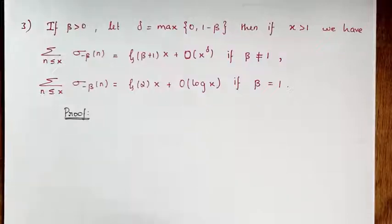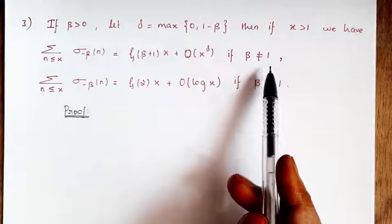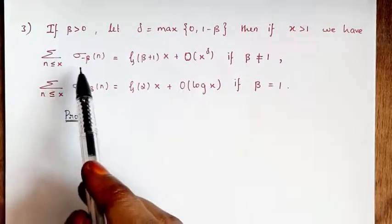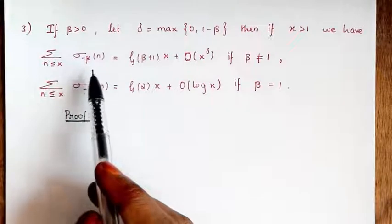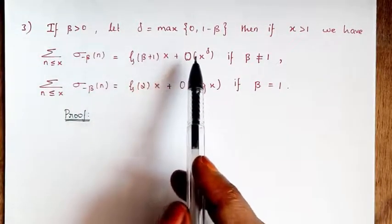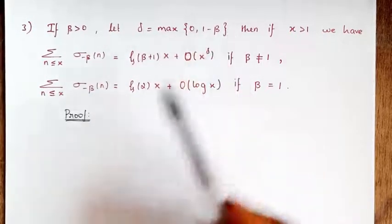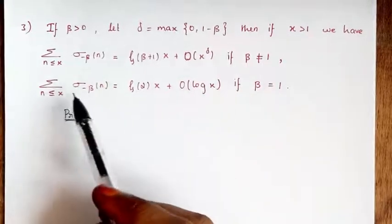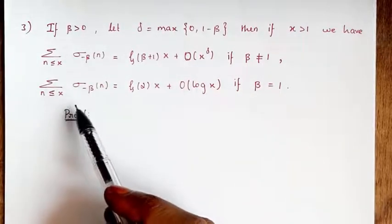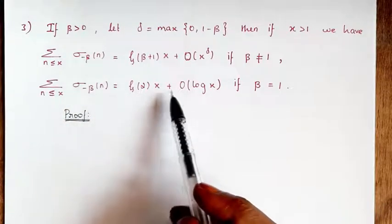Hello everyone. In this video I am going to solve this theorem by using Euler asymptotic formulae. In this theorem we have two cases. The first case is if beta not equal to 1, then sum of n less than or equal to x of sigma minus beta of n equals zeta of beta plus 1 into x plus big O of x power delta, where delta equals maximum of 0 comma 1 minus beta. The second case is if beta equal to 1, then we have sum of n less than or equal to x of sigma minus beta of n equal to zeta of 2 times x plus big O of log x.